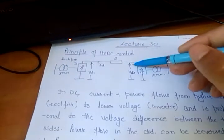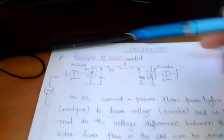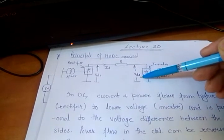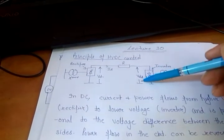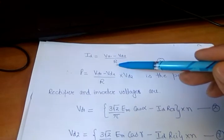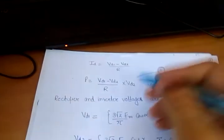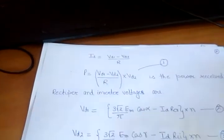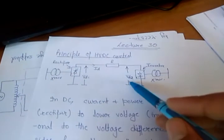The power received at the inverter terminal — from the rectifier we are sending and at the inverter we are receiving — is simply given by the product of the voltage at the inverter terminal multiplied by the current flowing in the line, that is Vd2 multiplied by ID. The current is Vd1 minus Vd2 divided by R, and the power received at the inverter terminal is that current multiplied by Vd2.